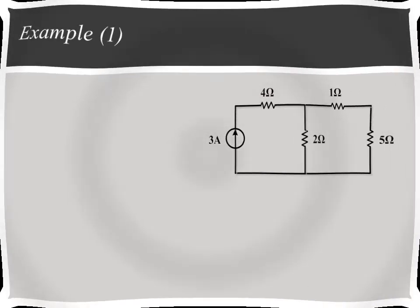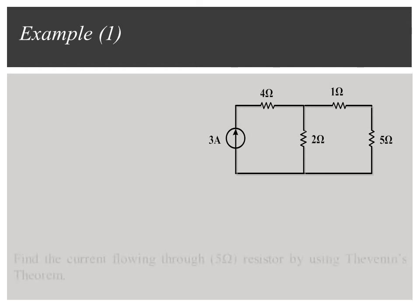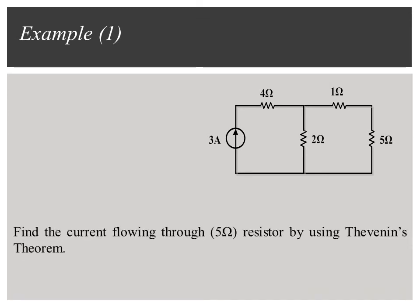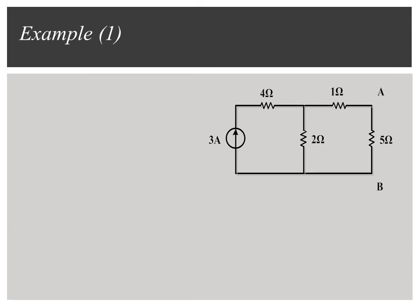Here is a simple example. Find the current flowing through the 5 Ohm resistor by using Thevenin's Theorem. To find V-Thevenin, remove the load resistor from the circuit and calculate the voltage between terminals A and B.